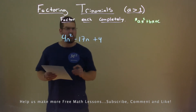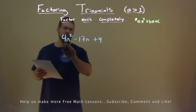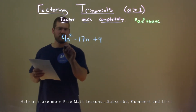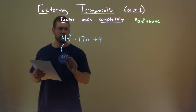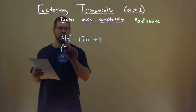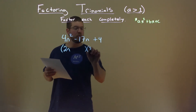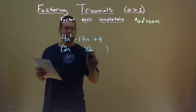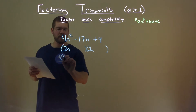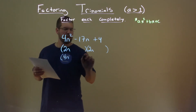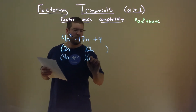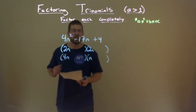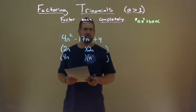The a value here, 4n squared, tells us that we have two possible forms. This can either be 2n times 2n, or it can be 4n times 1n. So we have to keep both those in mind as we move forward.